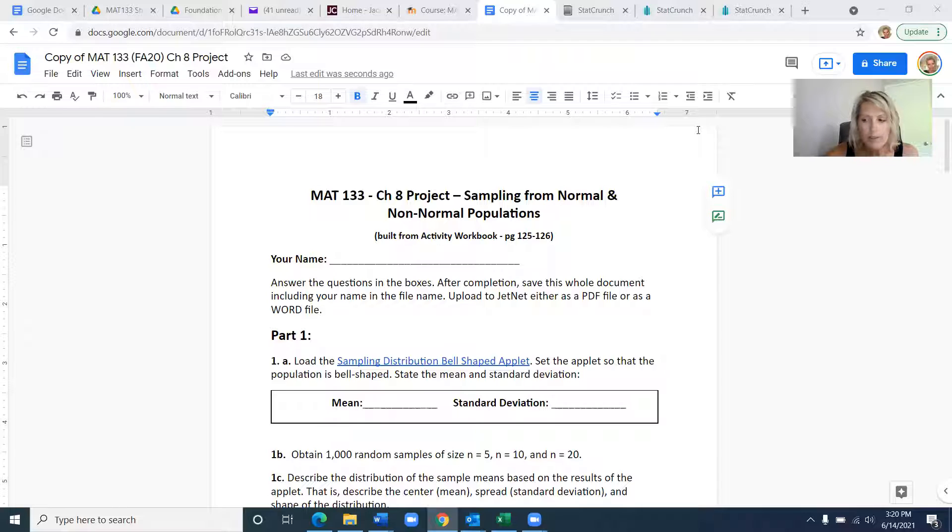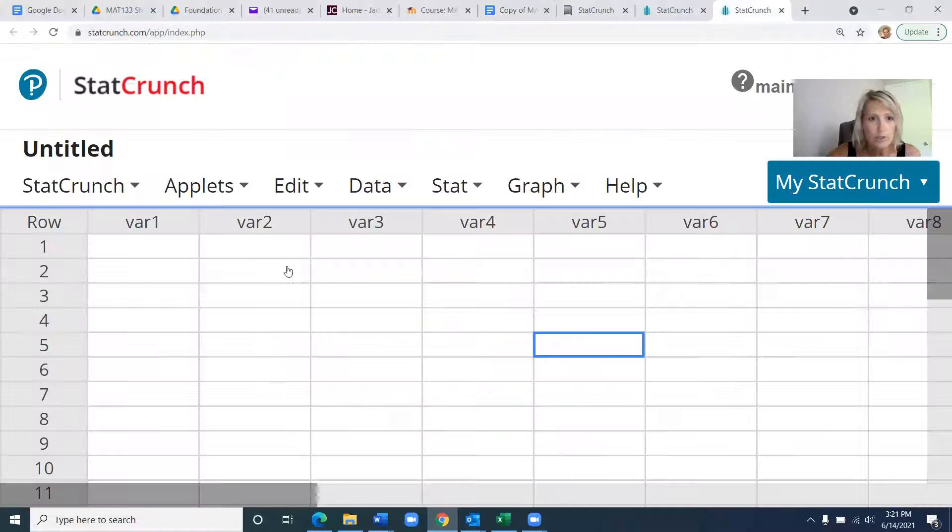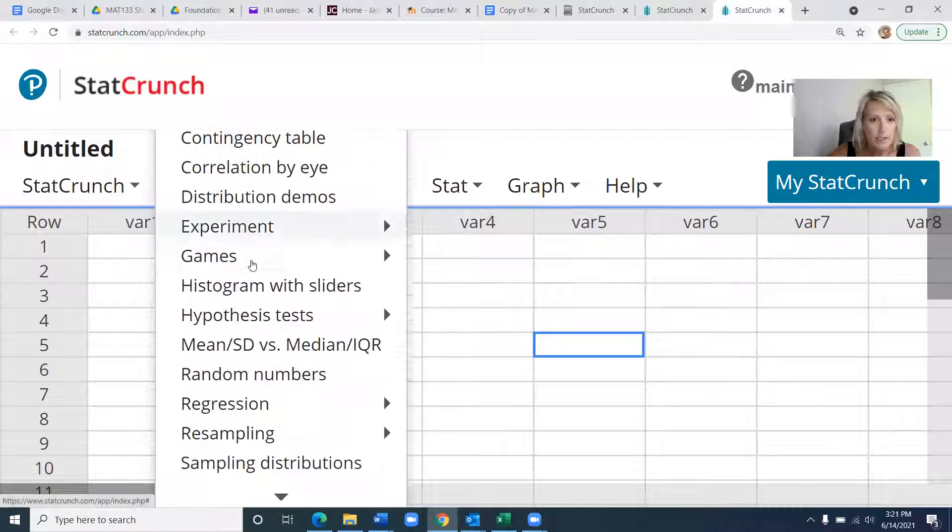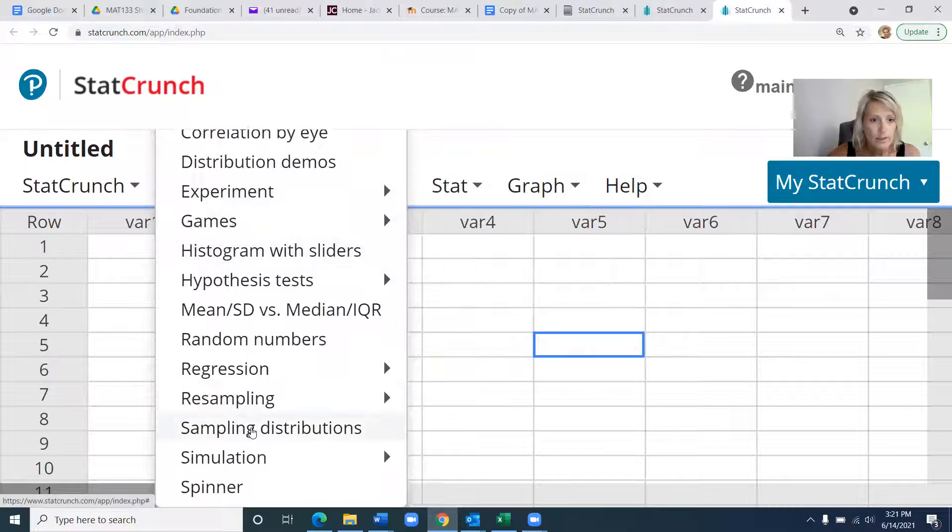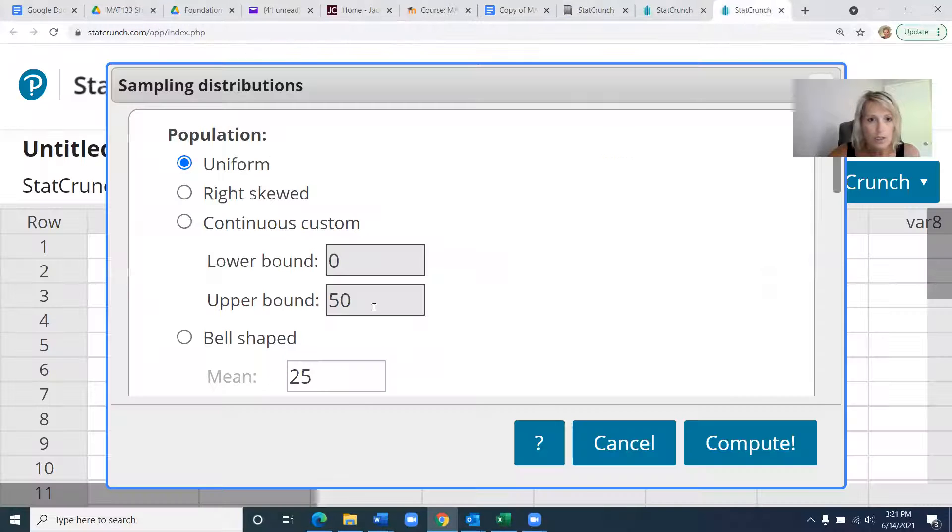That's why we have this thing called a standard error, which is taking the standard deviation and dividing by the square root of n. This project is getting at that. Once you make a copy of the Google Doc, it's asking you to load the sampling distribution bell-shaped applet in StatCrunch. In StatCrunch, you're going to go to Applets and scroll all the way down to the one called Sampling Distributions. In the project, it's first asking you to go to the bell-shaped one, so we're going to click on bell-shaped.